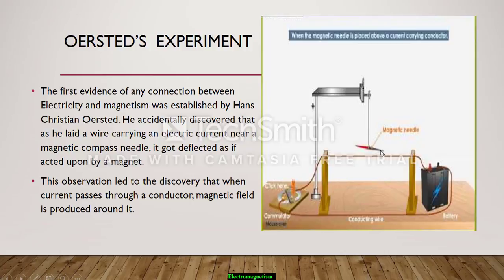So this observation led to the discovery that when current passes through a conductor, magnetic field is produced around it.